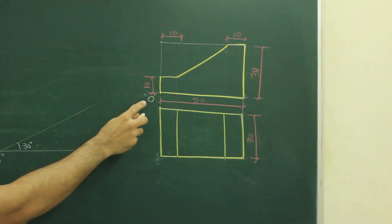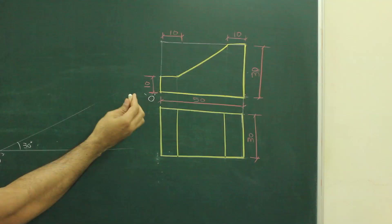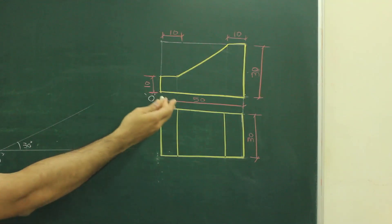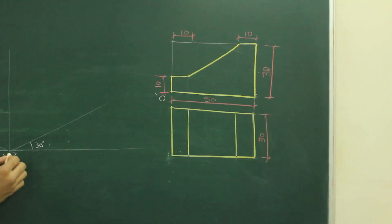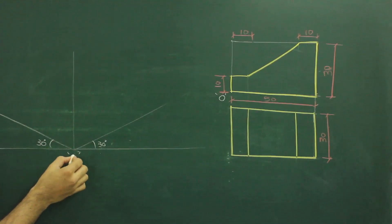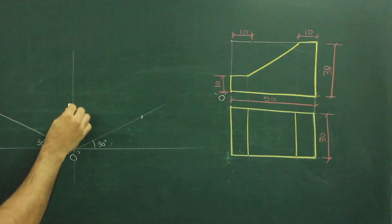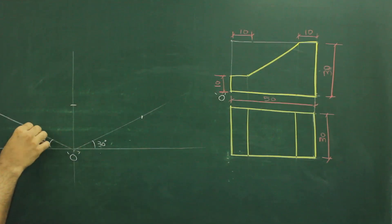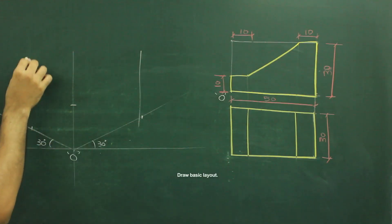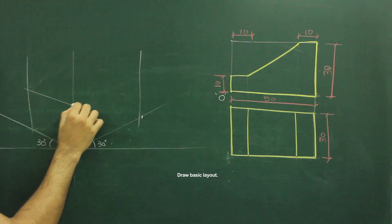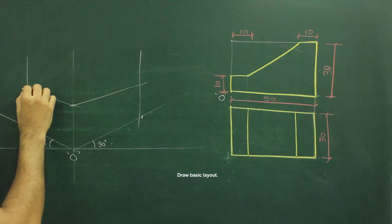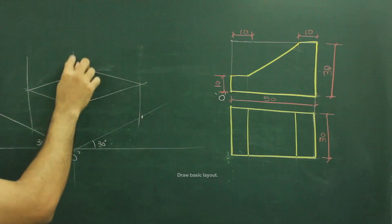So what we will do, again if you see in this sum, origin is here and I have given 50 on the right hand side. Same way, I will draw origin over here, I will write over here, and from here I will take 50, height 30 and width 30. Then I will draw vertical line and I will draw incline lines at 30 degree with the set square, and I will complete this layout.